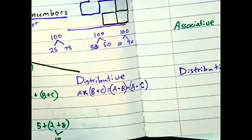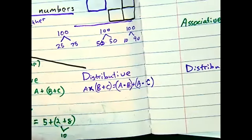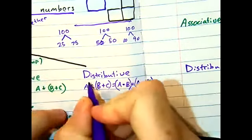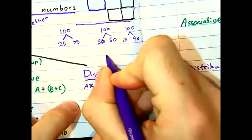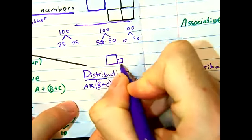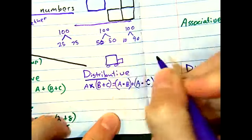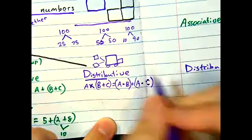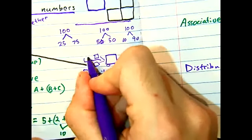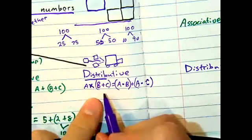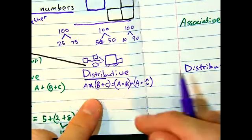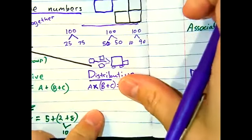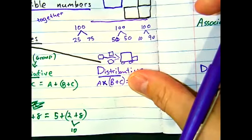Alright. Next one, distributive property. The key term here is distribute. And you could think about the UPS driver or the Amazon driver, sending out packages to people, distributing goods like Santa Claus. This one is all about how you send out information.